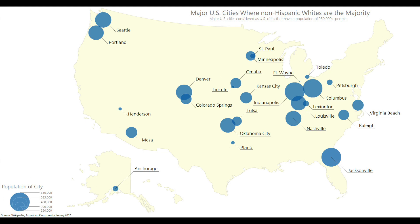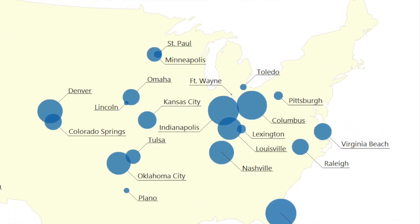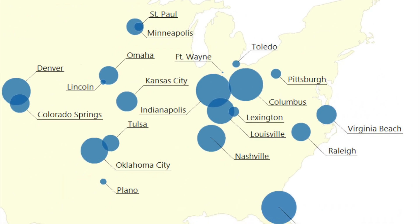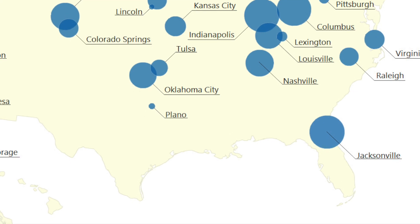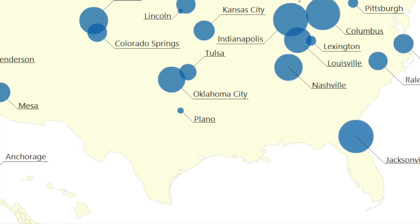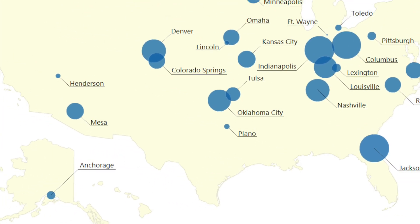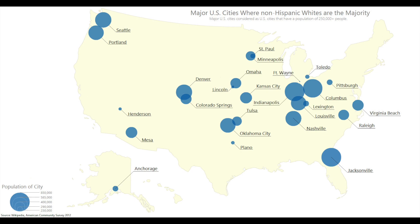This shows us major cities in the United States that are over 250,000 people where the majority of the population is white and non-Hispanic. A lot of cities on the East Coast and the South are completely off the list, such as New York, Atlanta, and Philadelphia. All the cities in Texas have disappeared except for Plano. And California is non-existent on this map.